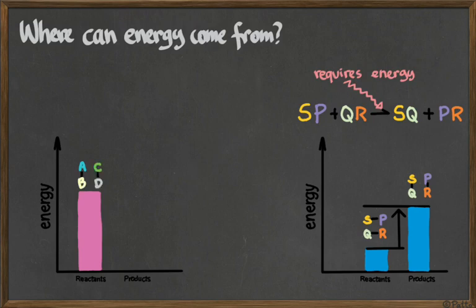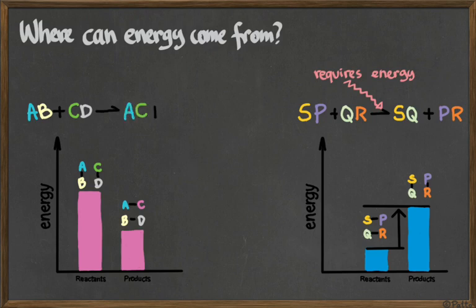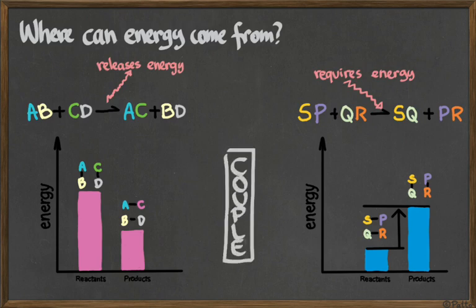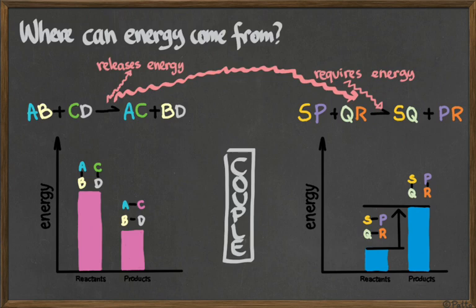Here we have AB plus CD reacting together to make AC plus BD, and this reaction on the left is exergonic - when it happens, it releases energy. If you have a reaction on the left that releases energy, it might be coupled with a reaction on the right that requires energy. Because then one chemical reaction may give energy to the other. The exergonic reaction on the left is giving energy to the endergonic reaction on the right - they are coupled, and the excess energy from one is used to power the endergonic reaction.